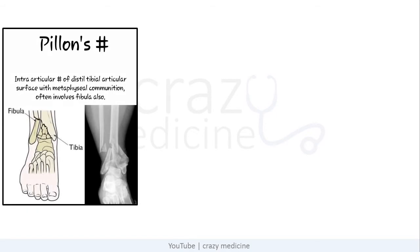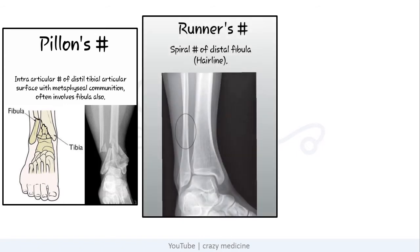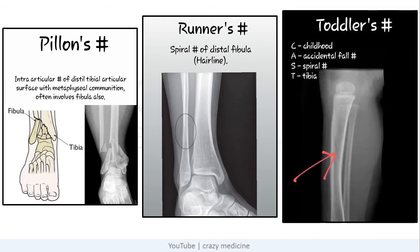Next is Pilon's fracture — it is an intra-articular fracture of the distal tibial articular surface with metaphyseal comminution, and it often involves the fibula also. Then Runner's fracture — it is a spiral fracture of the distal fibula. Then Toddler's fracture — it is a spiral or oblique undisplaced fracture of the distal shaft of tibia, usually occurring in children as a result of a twisting injury due to accidental fall.